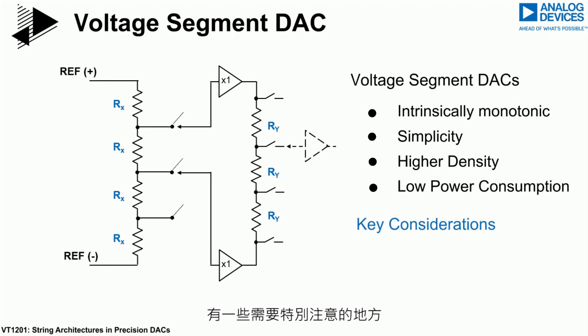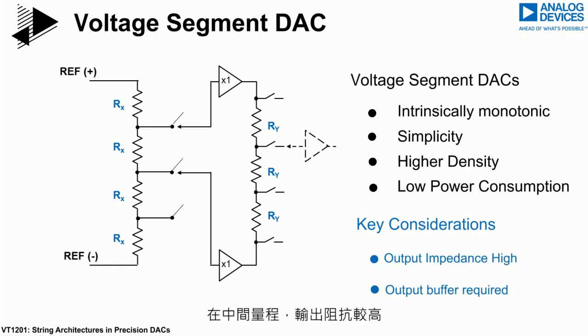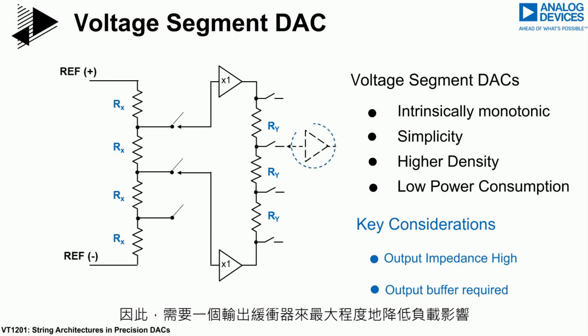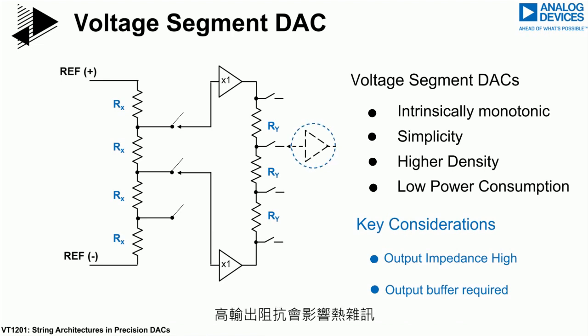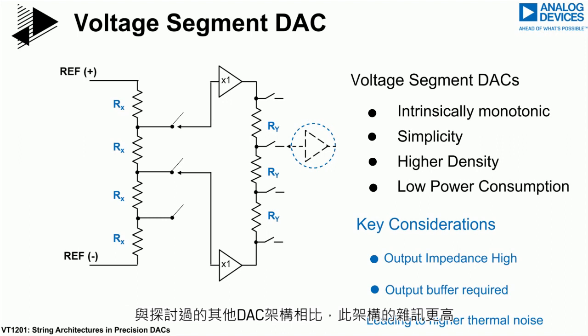Key considerations: the output impedance is relatively high at mid-codes. Thus, an output buffer is required to minimize load effects. The higher output impedance also has an effect on thermal noise, which is higher when compared with other DAC implementations discussed.